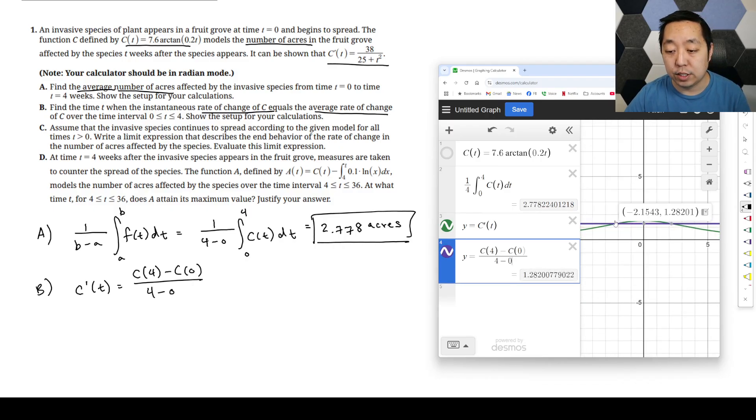C of 4 minus C of 0 over 4 minus 0. Then we just want to see where they intersect. They intersect on the left side, but we really only care about the time T greater than 0. Time starts at 0, so you only want the positive one here. That occurs at T is equal to 2.154, and don't forget the units.